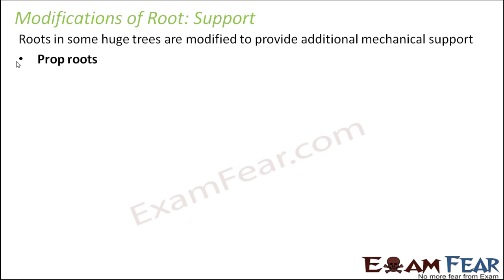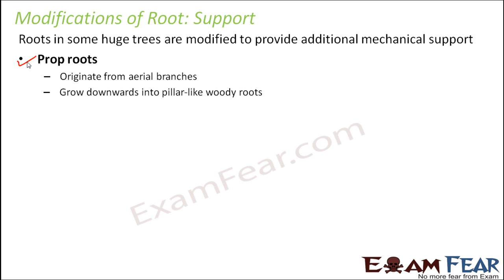One such modification is the prop root. Prop roots originate from aerial branches — they are adventitious roots. Instead of originating from the radicle or primary root, they originate from aerial branches above the soil surface. However, they grow downwards into pillar-like woody roots. The roots arise from the branches and start growing downward, reach the soil, and fix themselves inside, providing additional support.